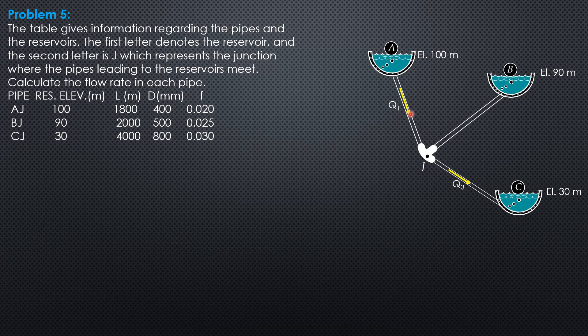let's compute for Q1'. The head loss when there's no flow at B would be 100 minus 90, or 10. So 10 equals 0.0826 times 0.02 length 1,800 Q1' square over diameter 0.4 to the fifth. So Q1' is 0.1856 m³ per second if there's no flow in or out of Reservoir B, or Q2 is 0.